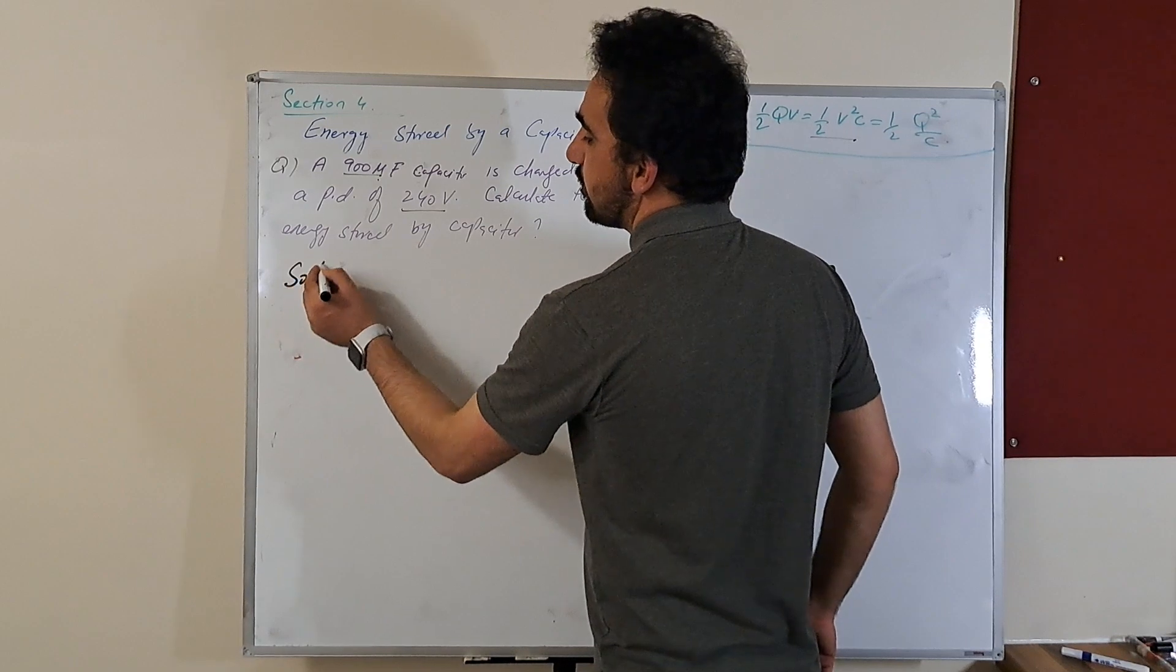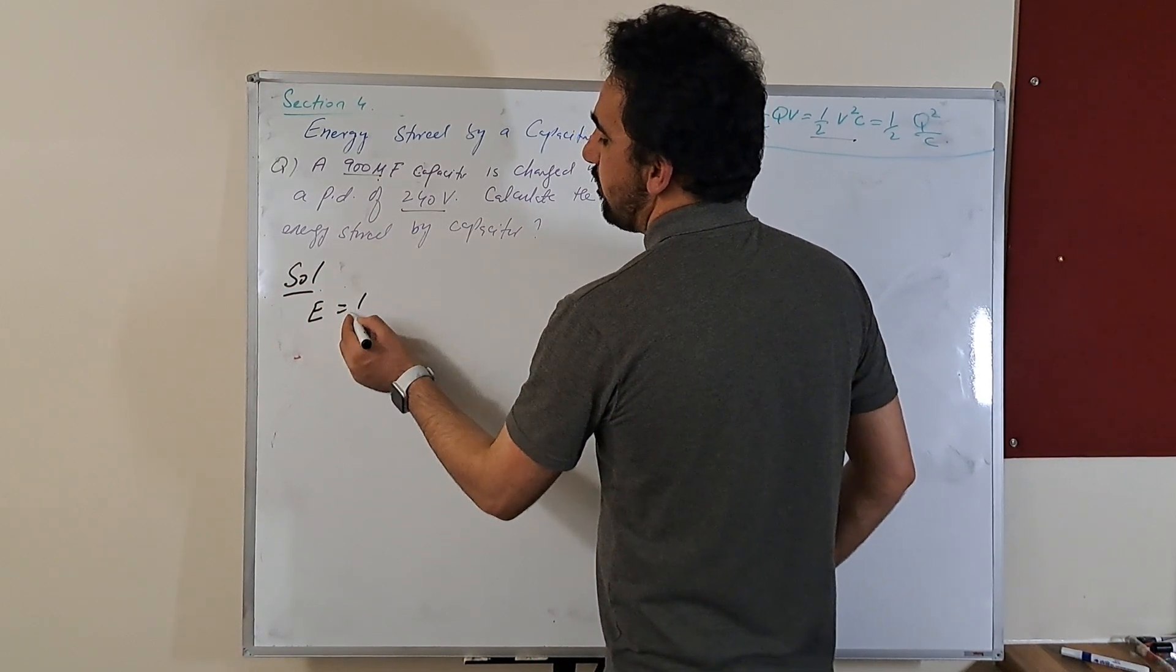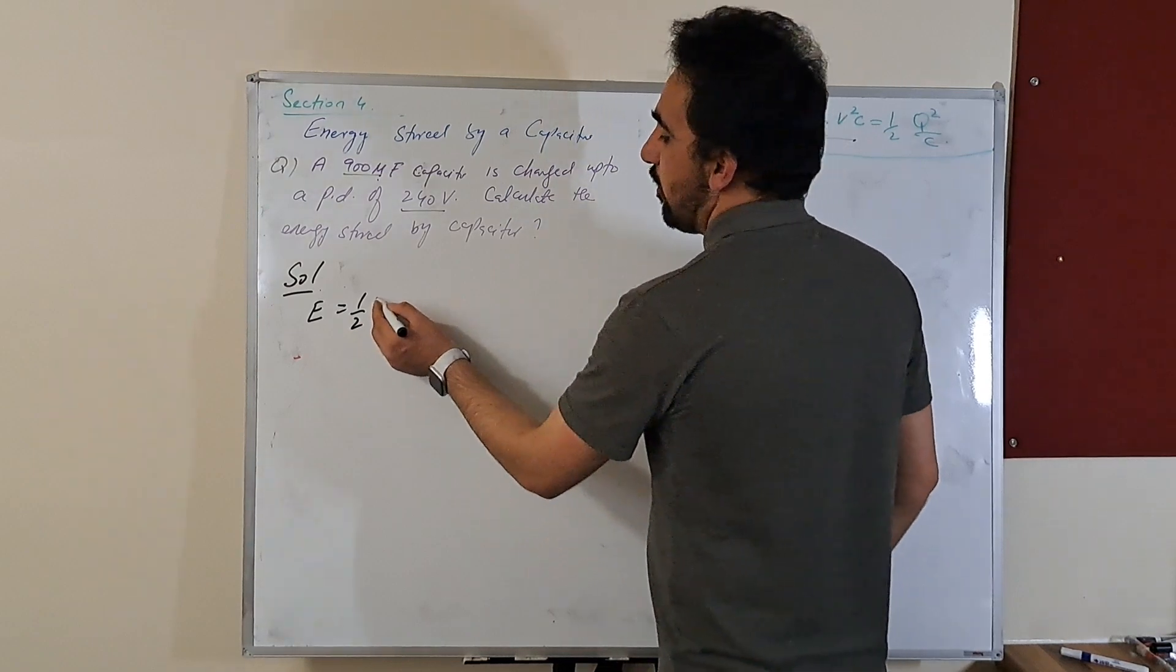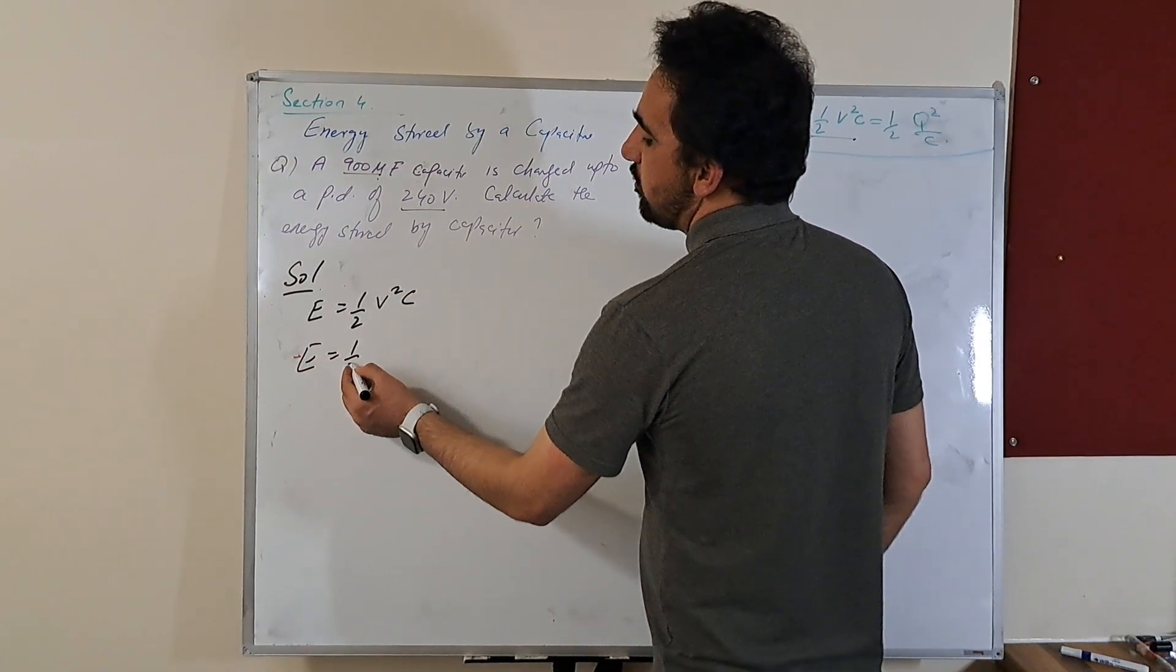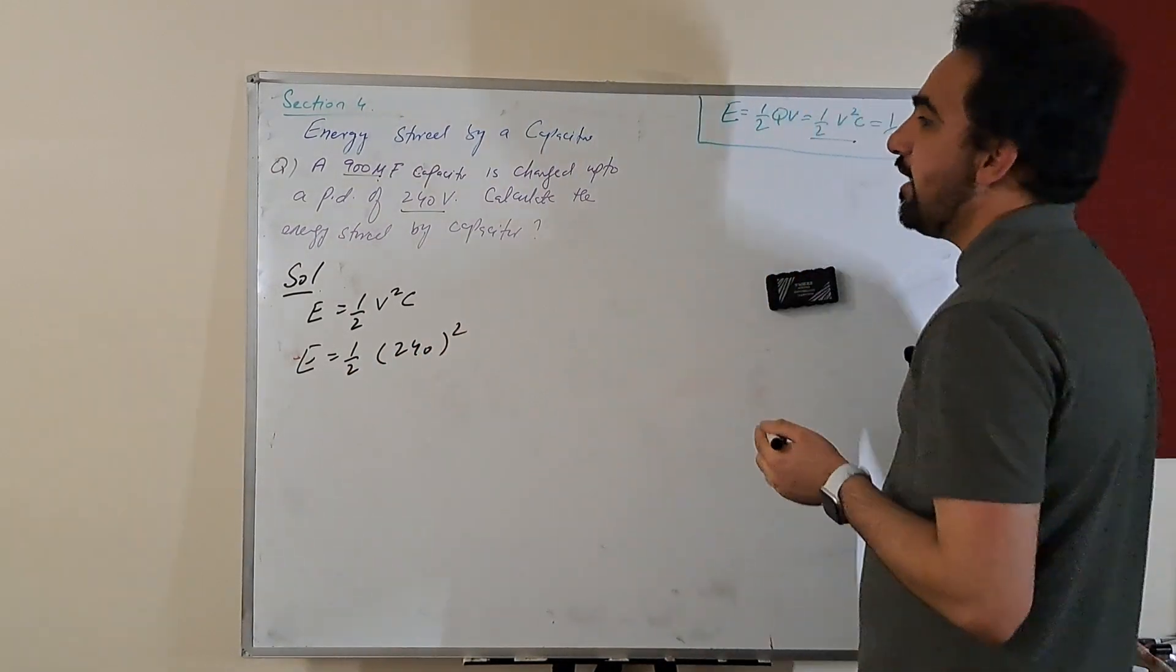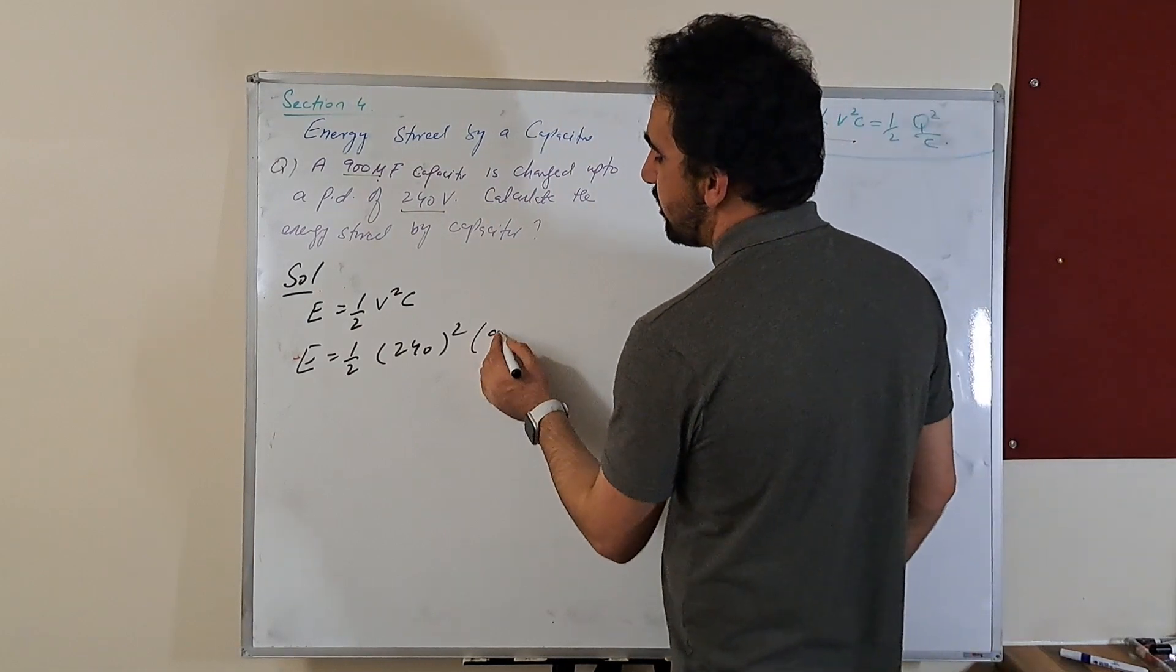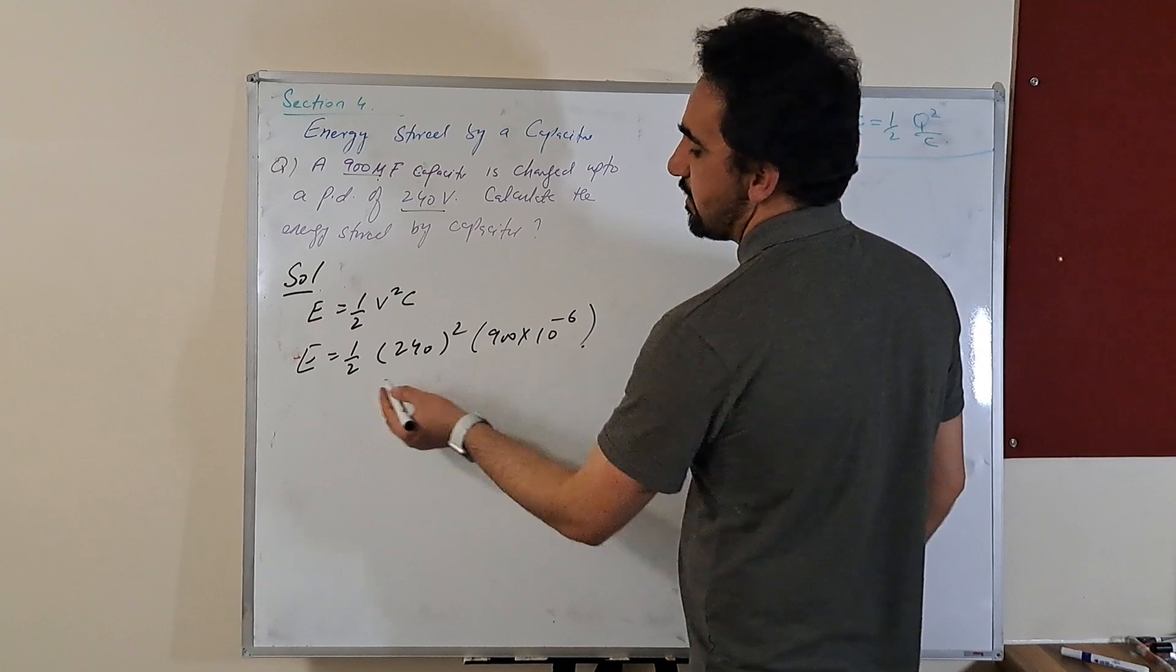Solution: energy stored is equal to 1/2 V squared C. 1/2, voltage is 240 and squared, and capacitance is 900 times 10 to the power minus 6.